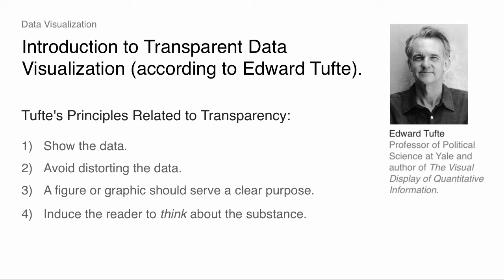Avoid distorting the data. A figure or graphic should serve a reasonably clear purpose — it might be descriptive, it might be trying to capture a certain causal relationship with a certain research design, or it may have some other goal. But when you look at it, with a figure description, it should be clear what the goal of the figure is. And then it should induce the reader to think about the substance — there should be more than just a statistical exercise. There should be a link to something important, something substantive. This point comes through the book again and again: effective graphics are much more than just art or putting statistics in an image. There has to be a real depth of intellectual understanding to create a good graphic.